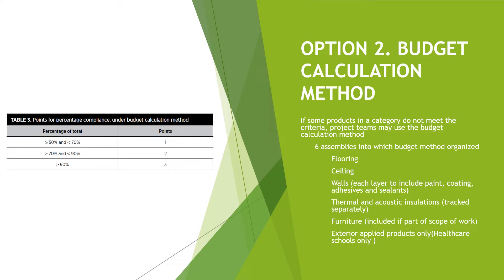Option two is the budget calculation method. This method is employed if some of the products in a category do not meet the criteria. Points for percentage compliance under the budget calculation method are based on percentage, as seen on the table. The budget method is organized into six assemblies: flooring, ceiling, walls (where each layer includes paint, coating, adhesives and sealants), thermal and acoustic insulation (tracked separately), furniture (if included in scope of work), and exterior applied products for healthcare and schools only.